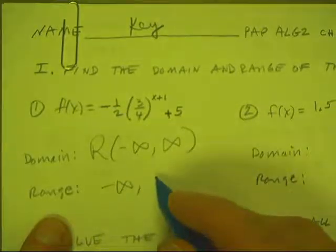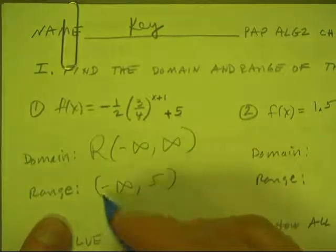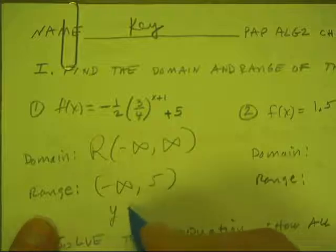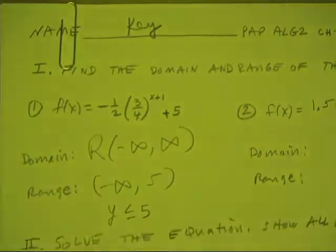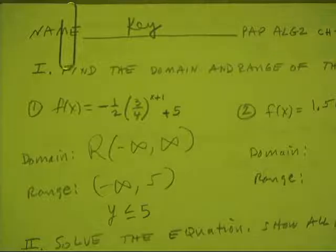So I've got negative infinity to 5. You could have said y is less than or equal to 5 and that would have worked too. Over now we'll be back.